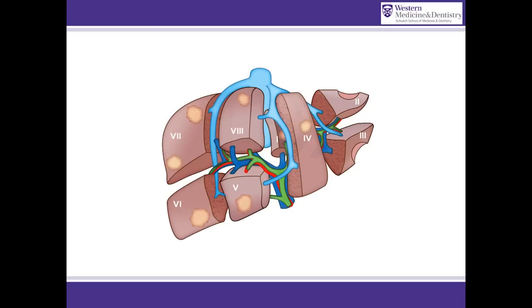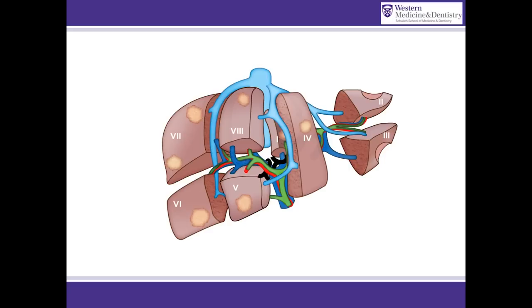We then selectively ligate the portal veins that feed the remaining diseased liver. This is followed by parenchymal transection between the future liver remnant and the diseased part of the liver.